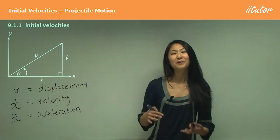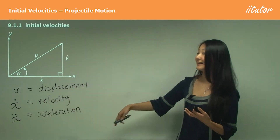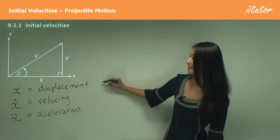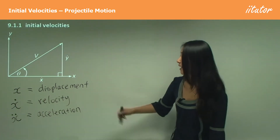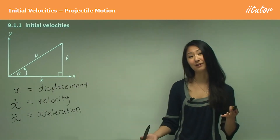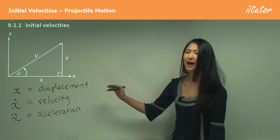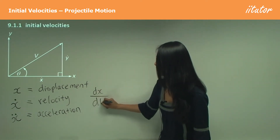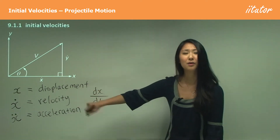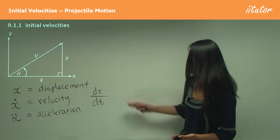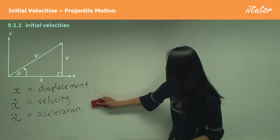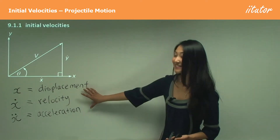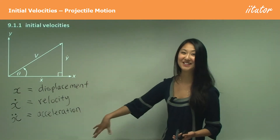The same applies with y: y is displacement, y-dot is velocity, and y with two dots is acceleration. You may ask why we use these symbols instead of writing dx/dt for velocity. The reason is it's just too much hassle to write that out every time, so we've developed these dot notation symbols in motion to make it easier. Always good to know what these symbols mean so you don't get confused later.